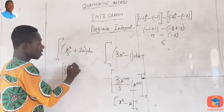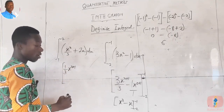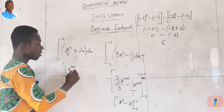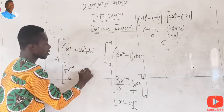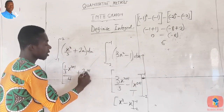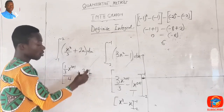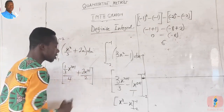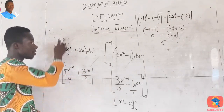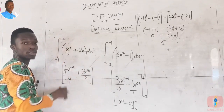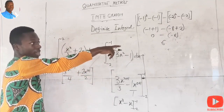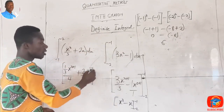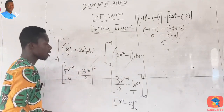Integrating x³/3: we write this as (1/3) · x^(3+1) divided by 4, giving (1/12)x⁴. Then integrating 2x, which is 2x to the power of one: we get 2x^(1+1) divided by 2, giving x². Since this is a definite integral with limits, we do not add a constant of integration.